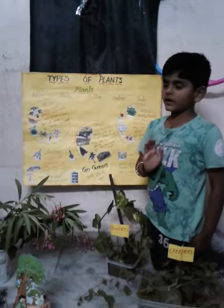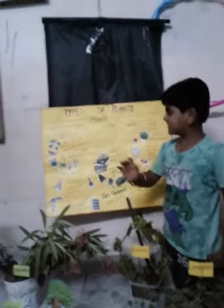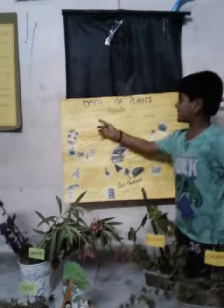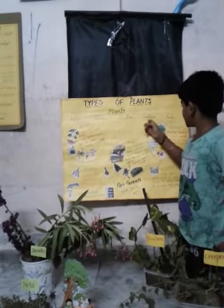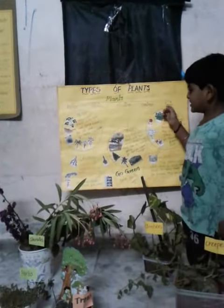There are five types of plants: herbs, shrubs, climbers, creepers, and trees.